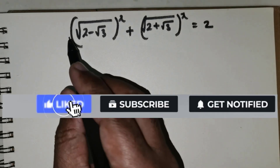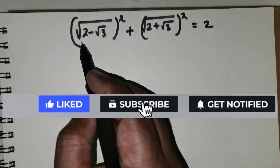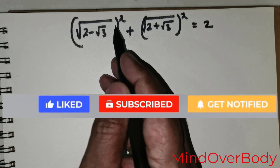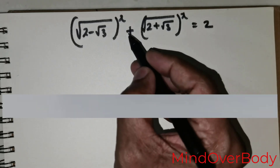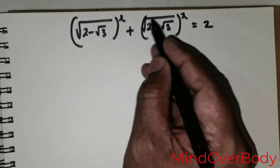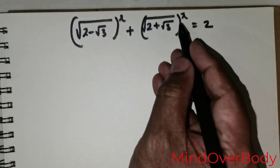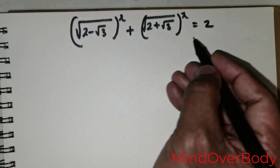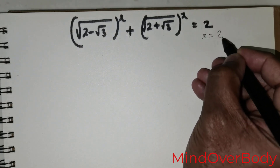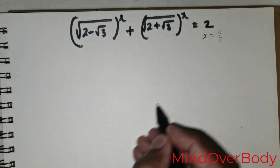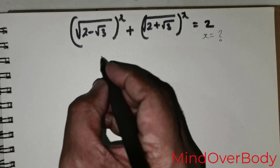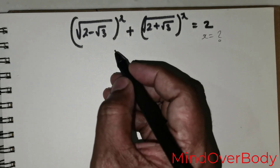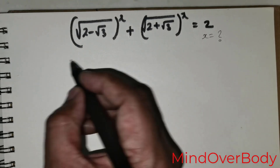Welcome students. We have been given this question: square root of (2 minus root 3) raised to the power x, plus square root of (2 plus root 3) raised to the power x, is equal to 2. We are expected to find the value of x. I will be showing you three different methods in solving this particular question.